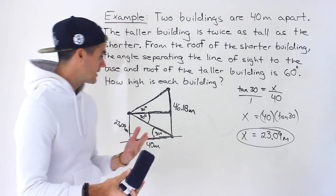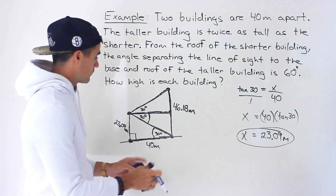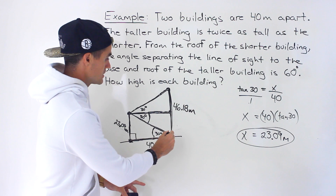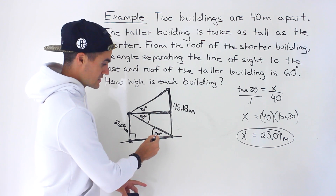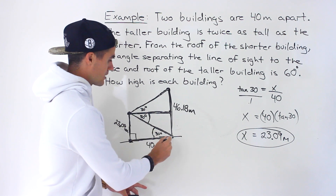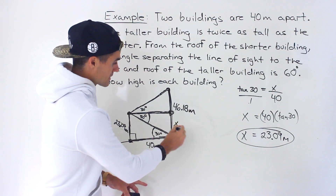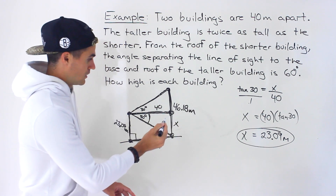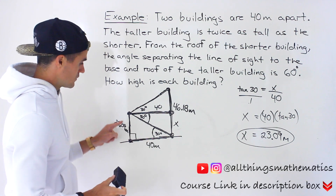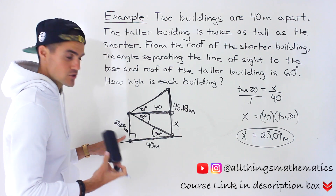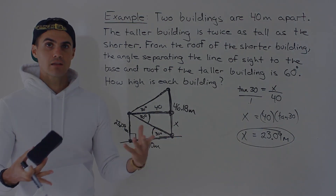A couple of key tricks in this question: first, drawing the diagram correctly; second, recognizing that the taller building is double the shorter, so the horizontal line splits the 60-degree angle in half; third, using the Z-pattern to get the 30-degree angle in the right triangle. Then apply the tangent ratio, solve for the shorter building height, and multiply by 2 for the taller building.